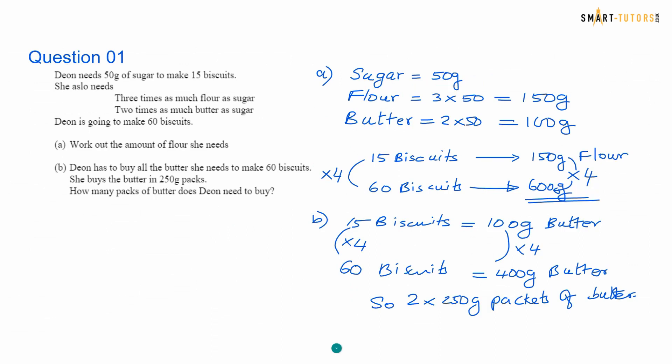Question number 1. Dionne needs 50 grams of sugar to make 15 biscuits. She also needs 3 times as much flour as sugar, 2 times as much butter as sugar. Dionne is going to make 60 biscuits, work out the amount of flour she needs.